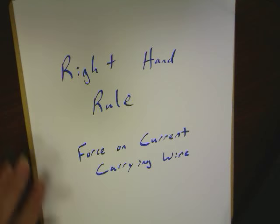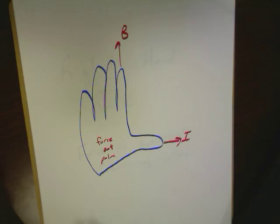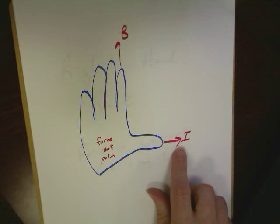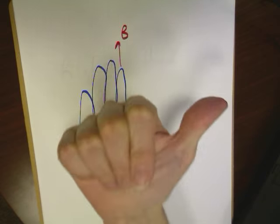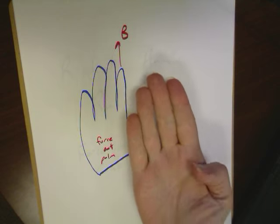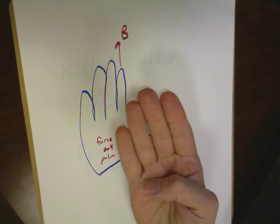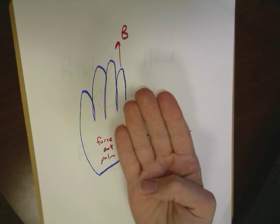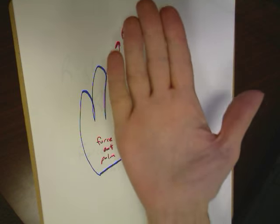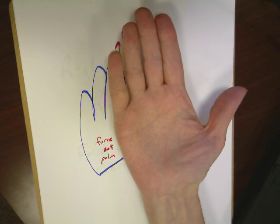If I take my general rule, and here's a nice cartoon one so I can write things out, my thumb represents the direction of the current. So I'll move my thumb in whichever direction the current is going. My fingers, just like our previous rule, represent the magnetic field. And then the force, the flat part of my hand, is going to show the direction the force is going.